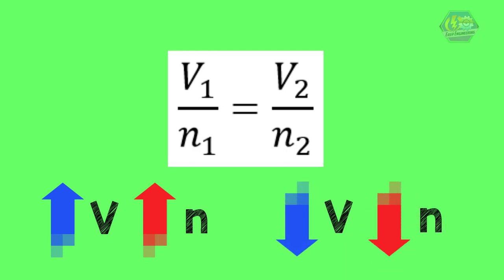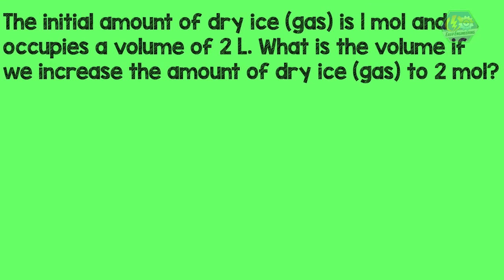For example, the initial amount of dry ice is 1 mol and occupies a volume of 2 liters. What is the volume if we increase the amount of dry ice to 2 mol? So, we first identify the given.